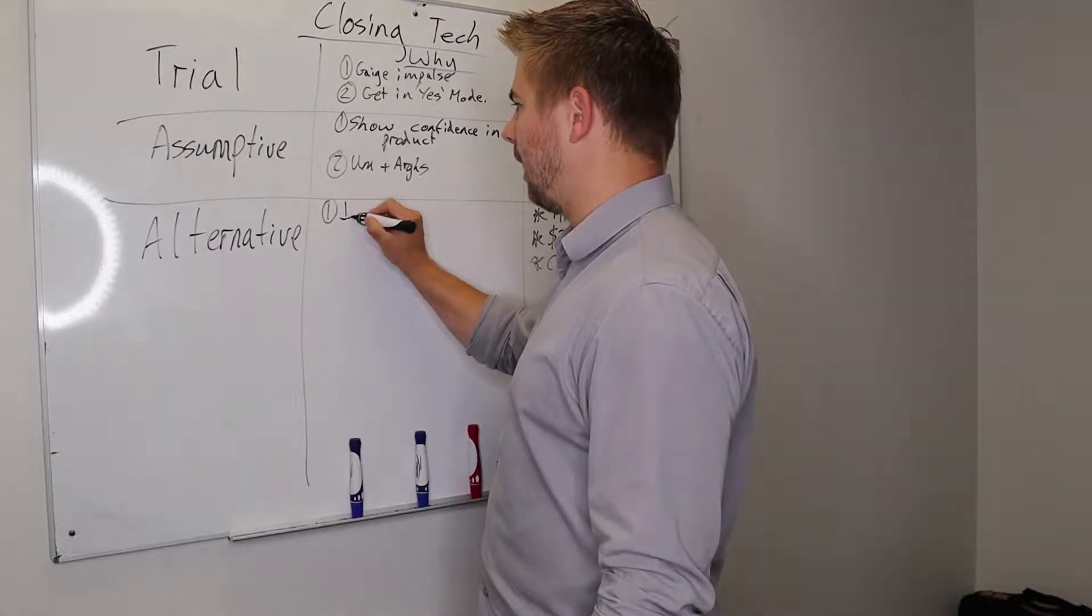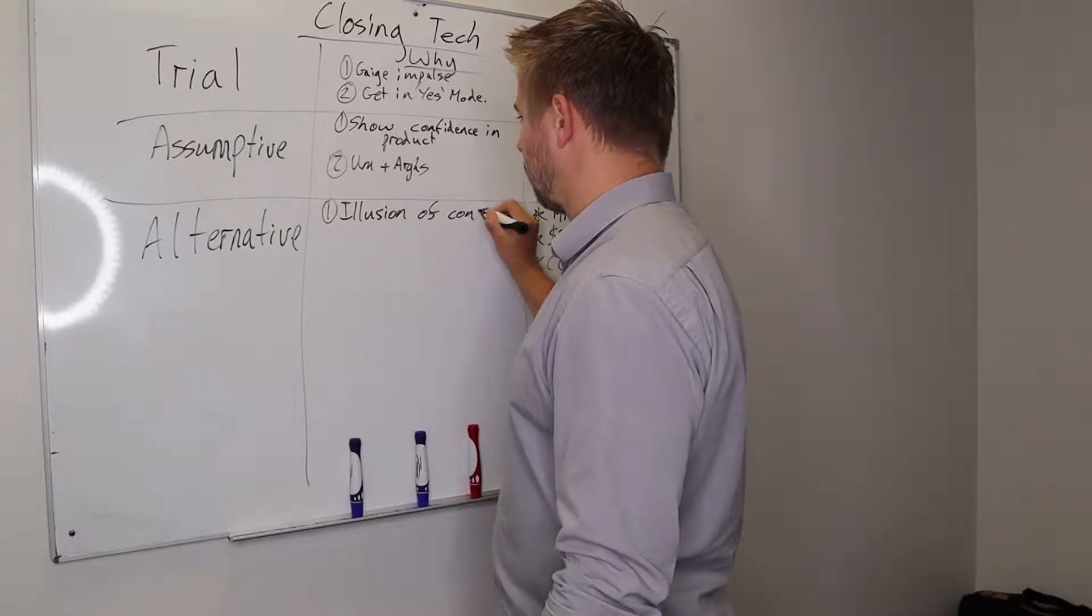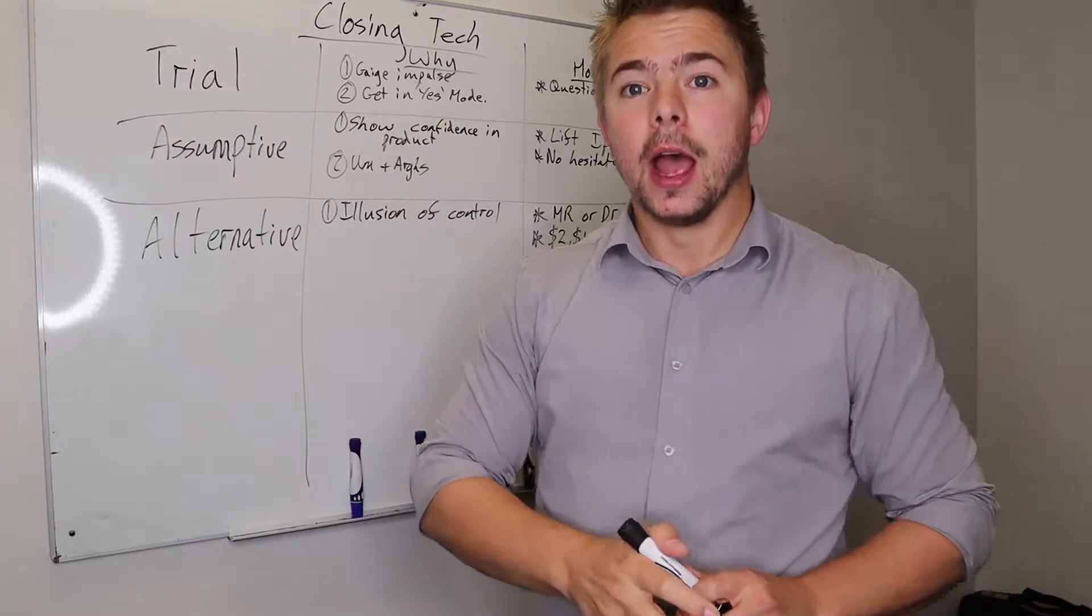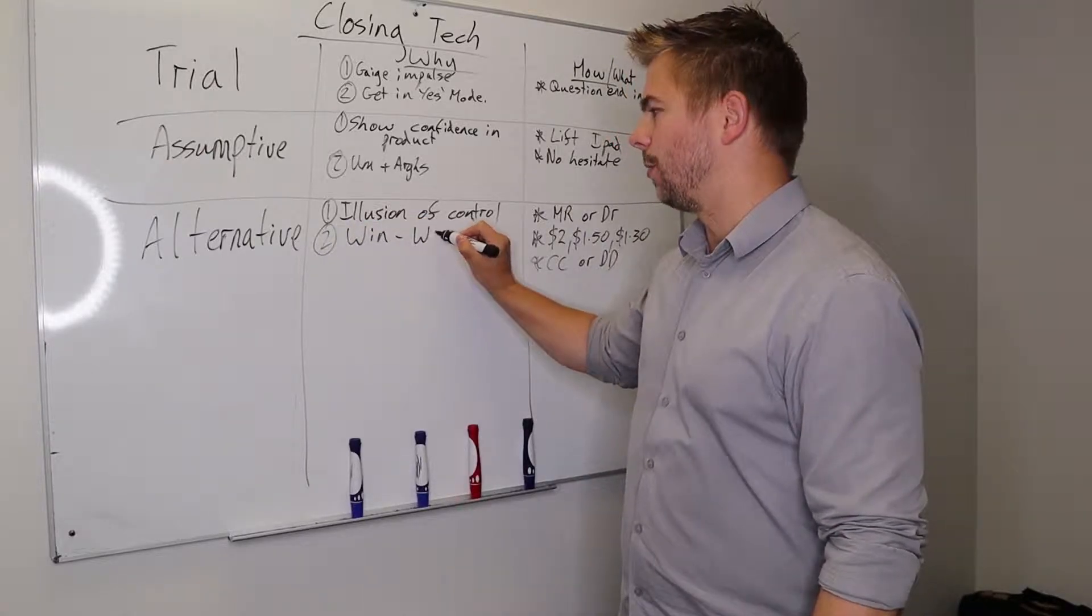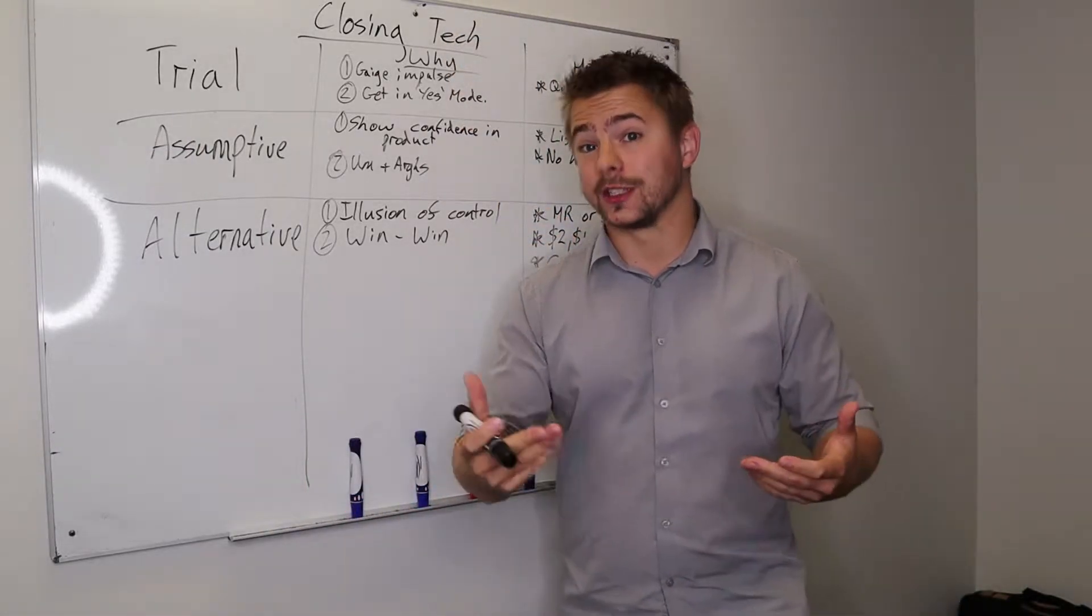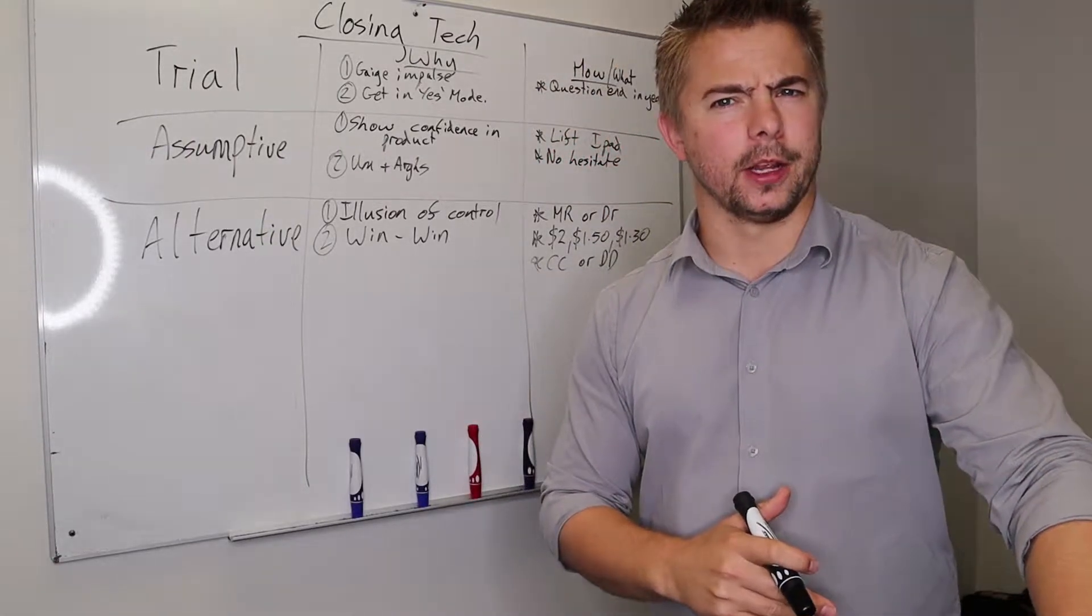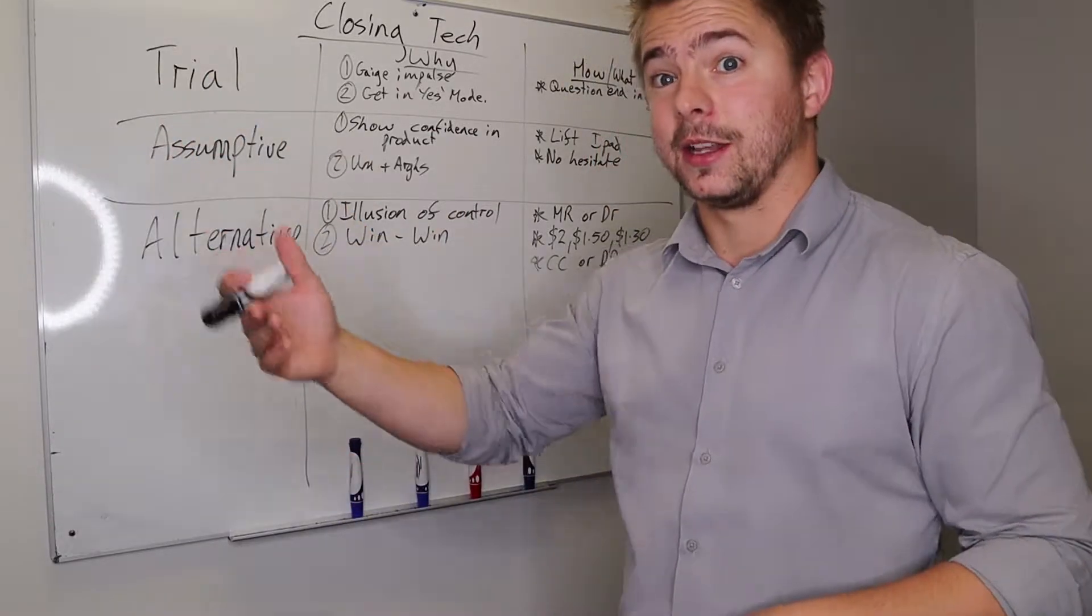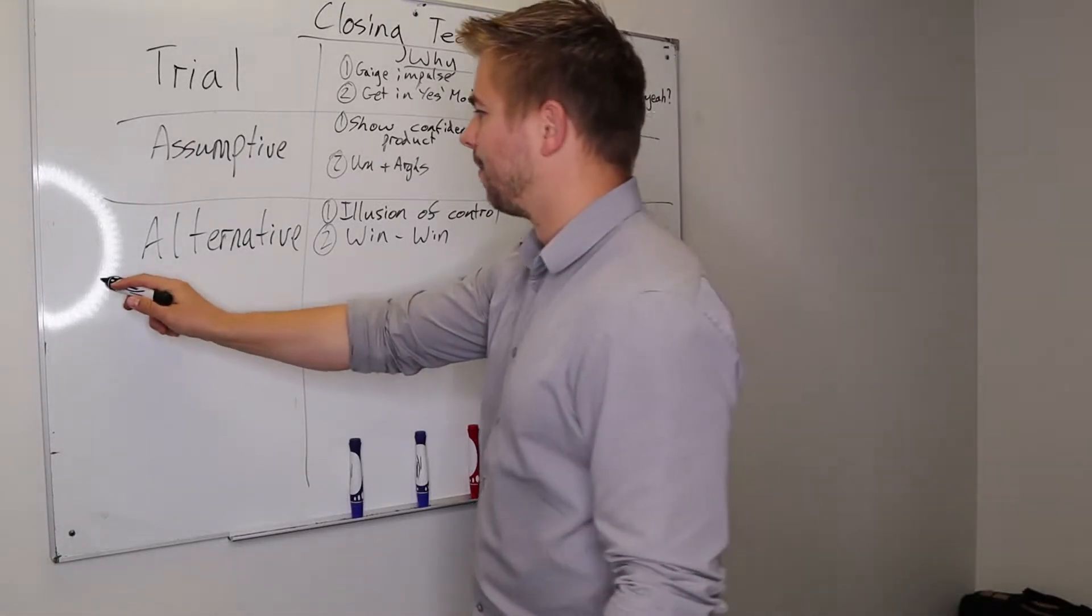The reason we do this, it gives them what we call the illusion of control. So when you're giving people the illusion of control, obviously what they'll do is they'll think that they're the ones making the decision, even though you're giving them a win-win scenario. So it is a win-win scenario for us. You're giving them two options. And you'll see this happen all over. It's obviously with any type of sales, there'll always be this or this, or a good salesperson. Do you want this one or this one? It makes them feel like they're in control. They've made that decision. But really it's a win-win scenario for them. So that's an alternative close.